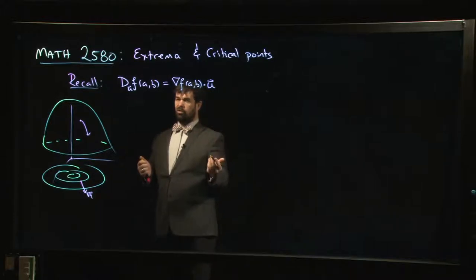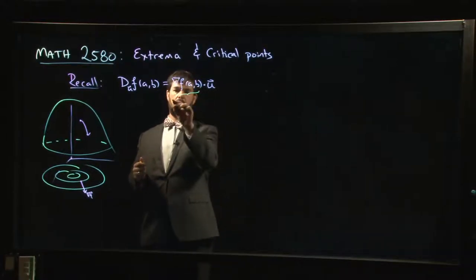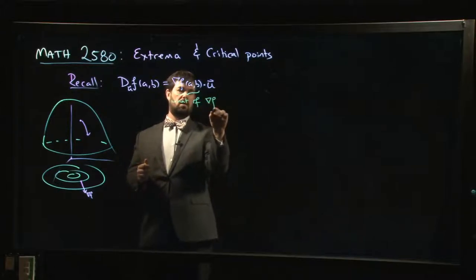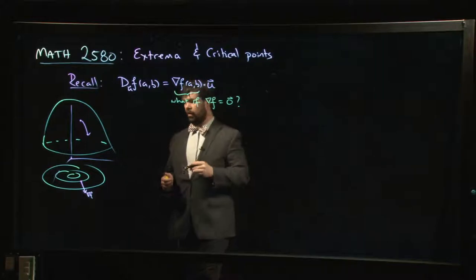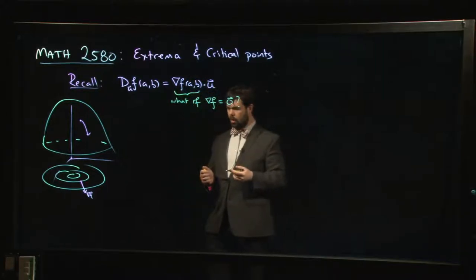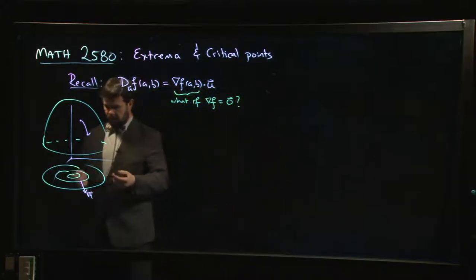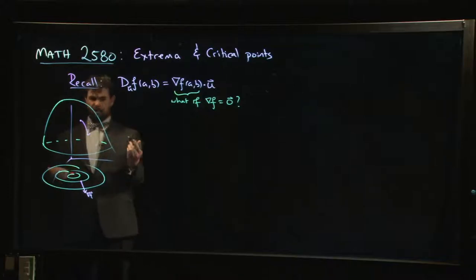One of the questions that you could ask is, what if this is zero? What happens if the gradient gives you the zero vector? Well, what does happen? Let's think about what happens in this case.